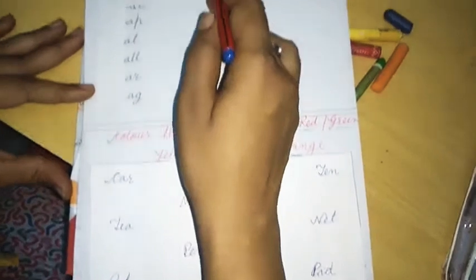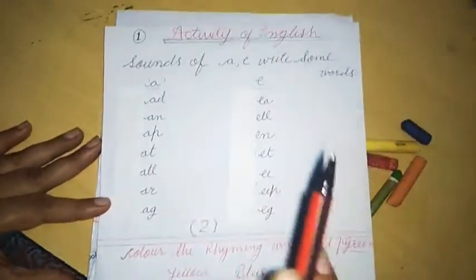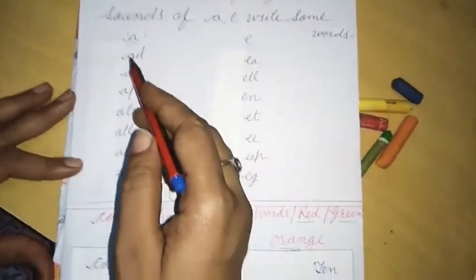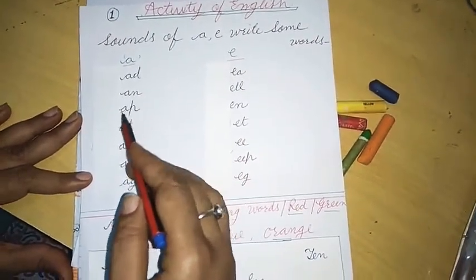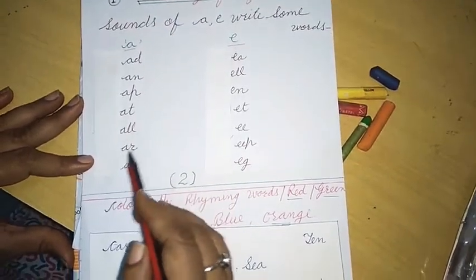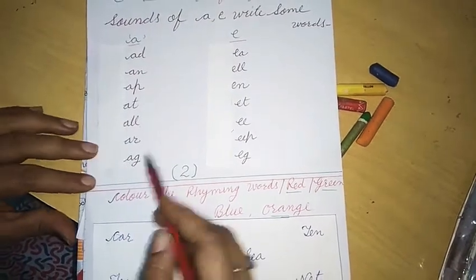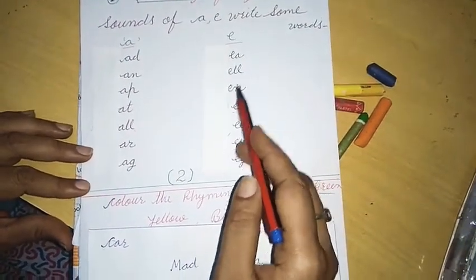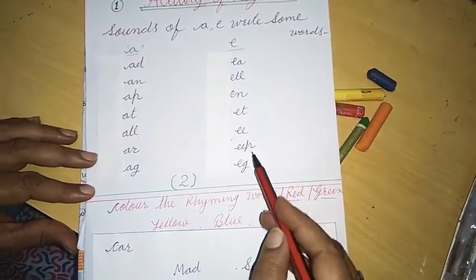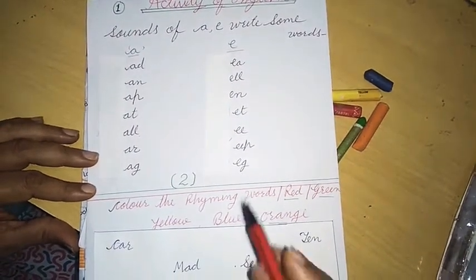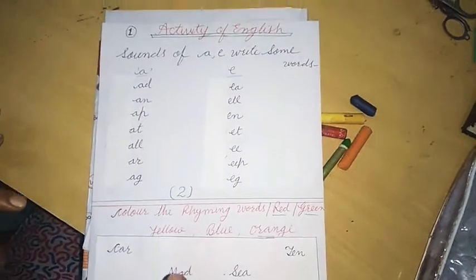What is the sound of A and E? Write some words. A, D, A, N, A, P, A, T, A, L, A, R, A, G, E, A, E, A, E, L, E, N, E, T, E, E, E, E, E, E, P and E, G. So, I have taken one-one alphabets and we will write all the alphabet from each other.